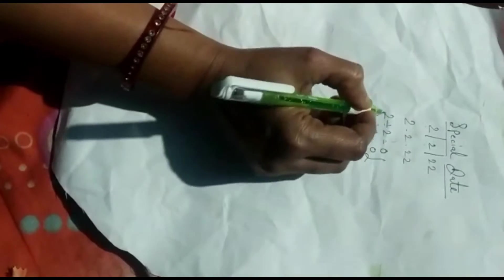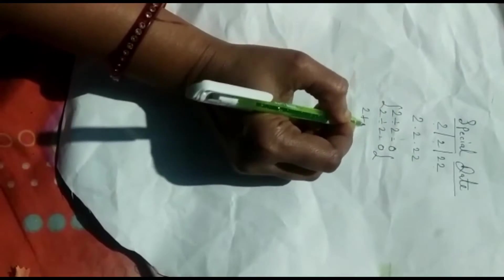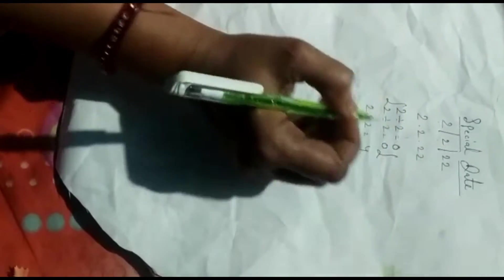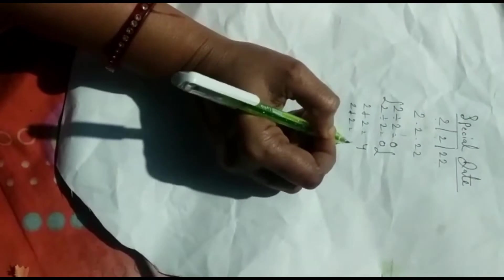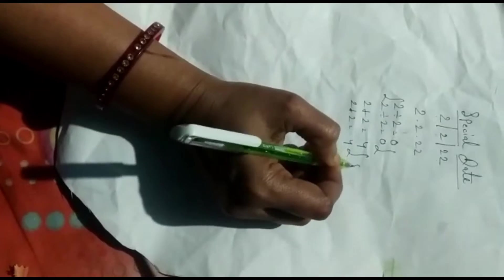Now, let's see. 2 plus 2 is equal to 4. Now, we will plus 2 plus 2 is equal to 4. This is what? This is 8.